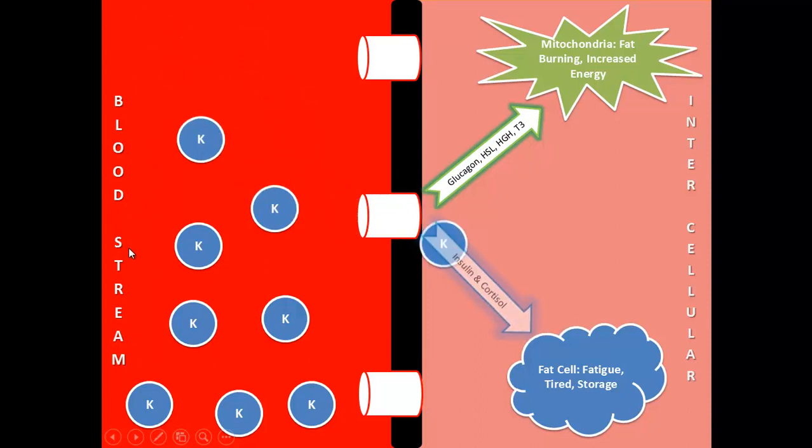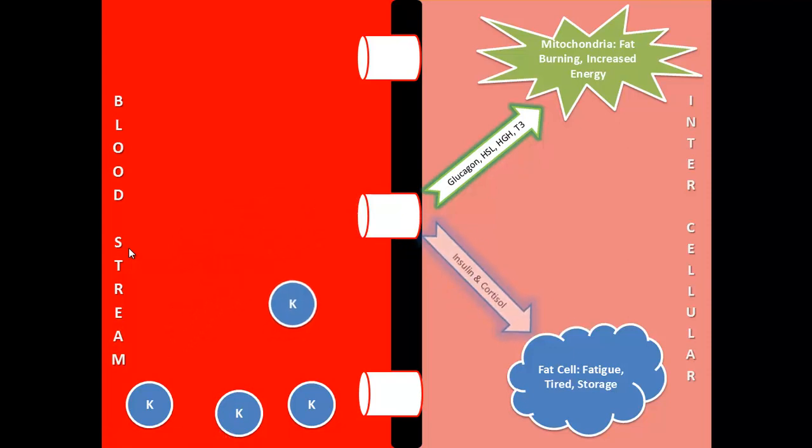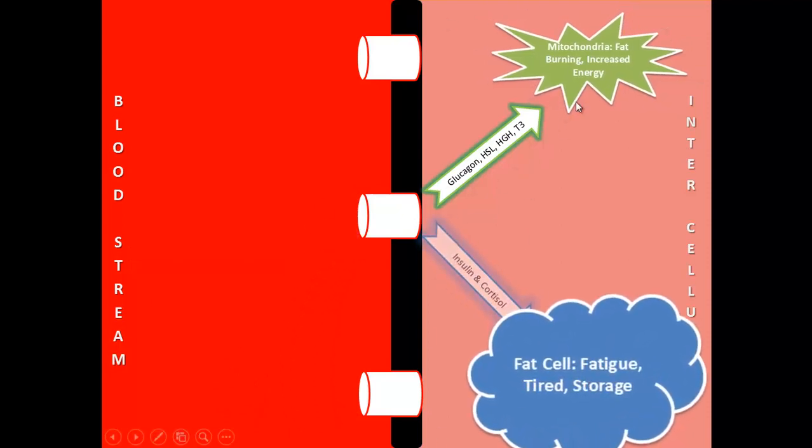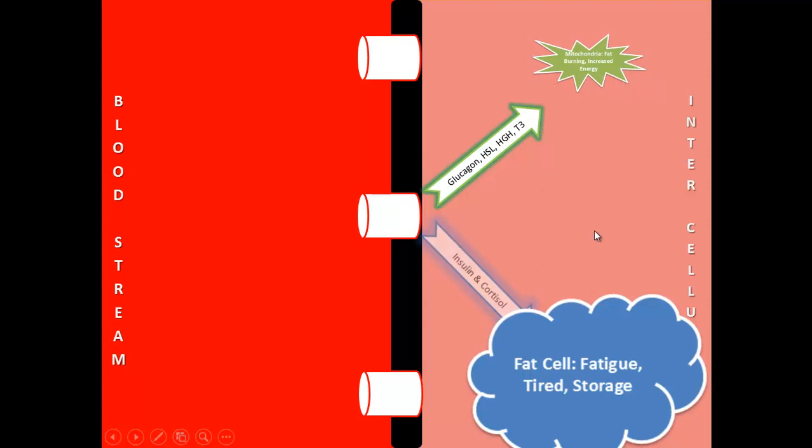Over time, what we're going to start to see is an accumulation in the fat cell of calories and the fat gets bigger and bigger. That's a key concept here. As the fat cell is getting bigger, the mitochondria gets smaller. Typically, we always gain weight and feel more lethargic. We always feel worse when we get fatter. You always get more sluggish, more tired, and more fatigued.